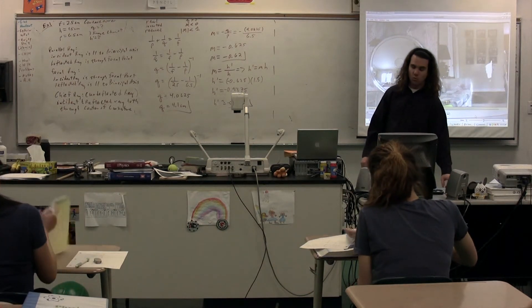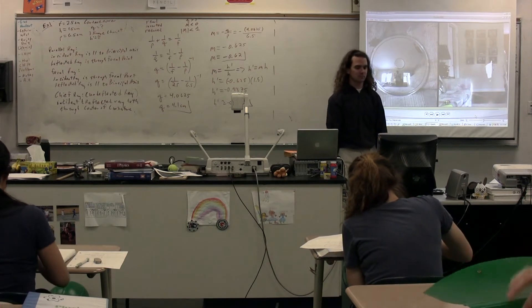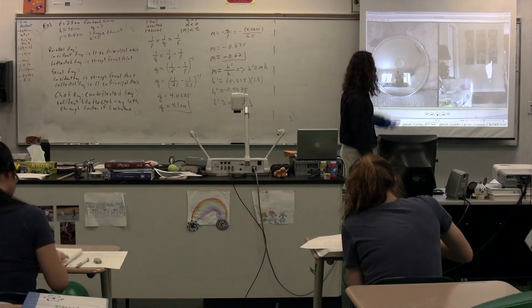With a convex mirror, what do you see? Give me an image characteristics, Colonel. It's reduced. Reduced, what else?